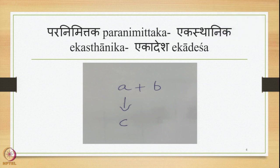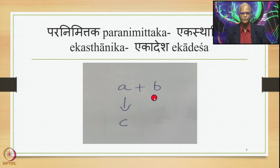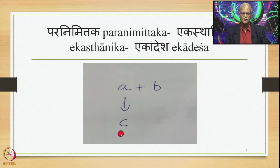Currently we are studying Paranimitta Ka Ekasthanika Ekadesha. Purva Nimitta Ka Ekadesha was already studied in previous lectures, especially the sutras Stoho Shchuna Shchuhu dealing with Shchutva Sandhi. Paranimitta Ka Ekasthanika Ekadesha is diagrammatically represented as: A followed by B (both in Samhita mode), where B is the Paranimitta, and when B follows, A gets substituted by C.